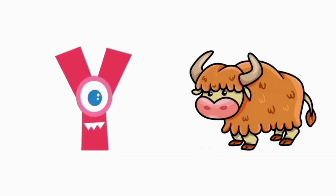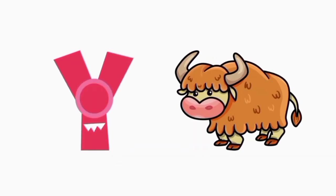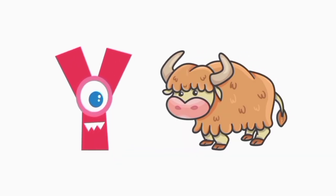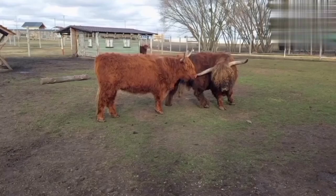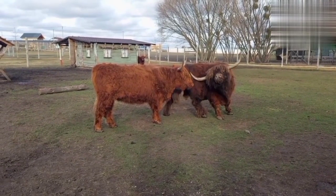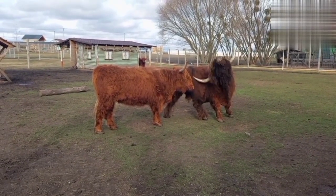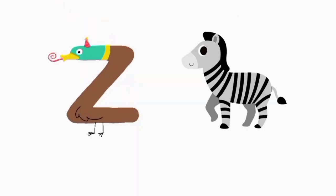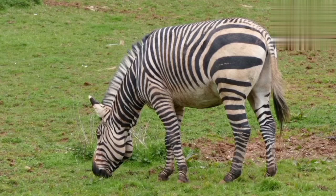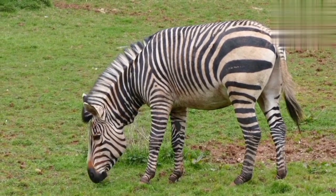W is for yak. Y is for yak. Yak, yak, yak. Z is for zebra. Z, Z, zebra.